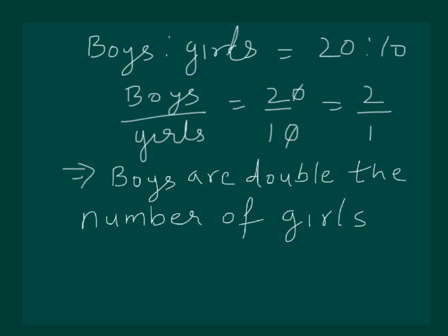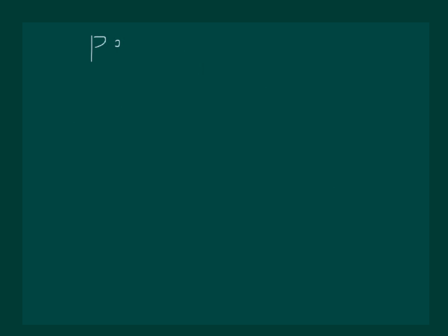So what we are actually doing is comparing two things — boys to girls. Similarly, we can compare anything, maybe fruits in a basket. Say there are 20 apples and 5 oranges; then we can compare the number of apples to oranges, or oranges to apples. We can also do this comparison using percentage.